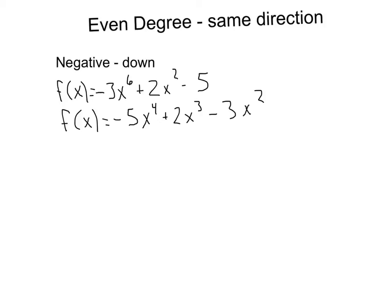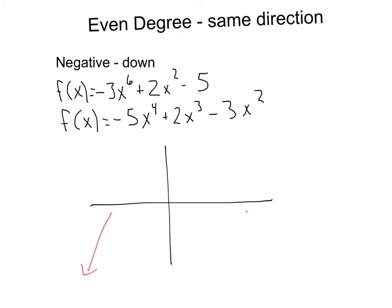In the case where we have a negative leading term with an even degree, both end behaviors are going to be downwards towards negative infinity. Here we have F of X equals negative 3X to the sixth — a negative leading term with an even degree. Here we have negative 5X to the fourth — also a negative leading term with an even degree. Because we have the even degree, the end behaviors are going to be pointing the same direction, and since it's negative, our end behaviors are going to be downward on each side of the function.